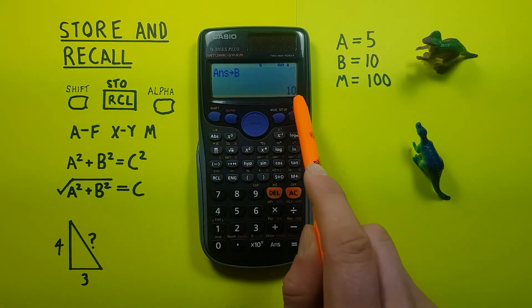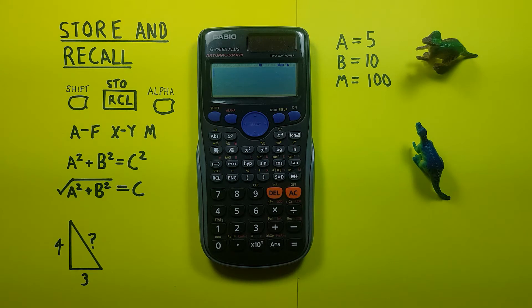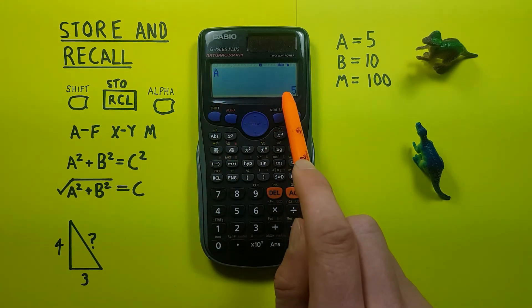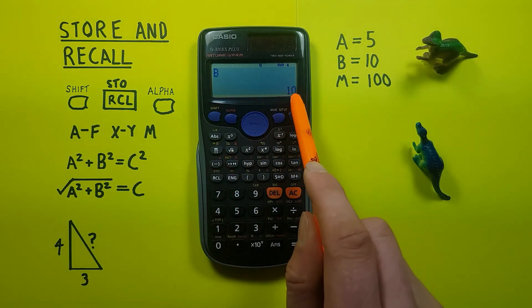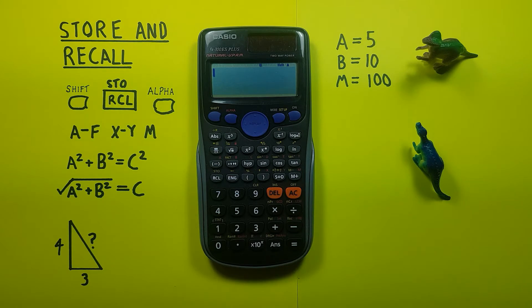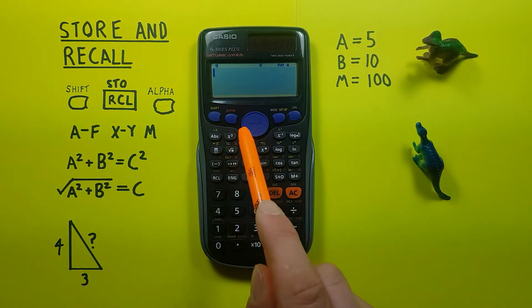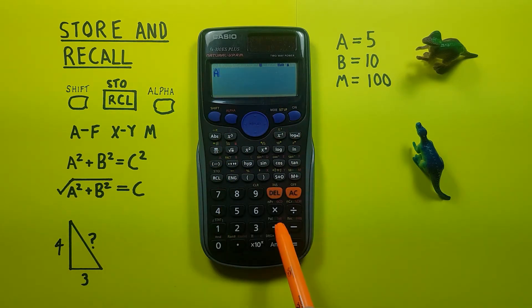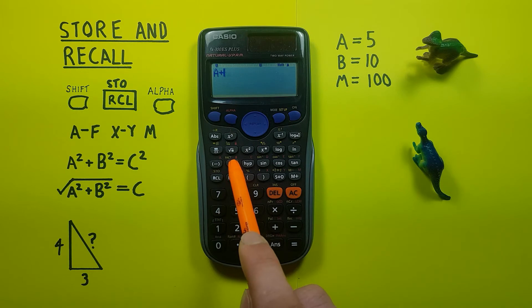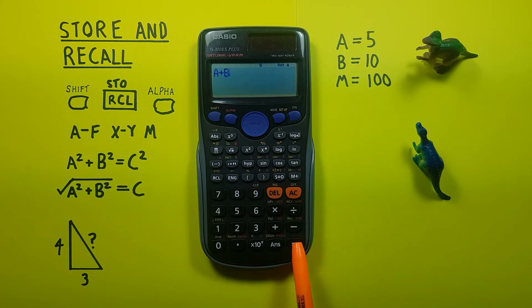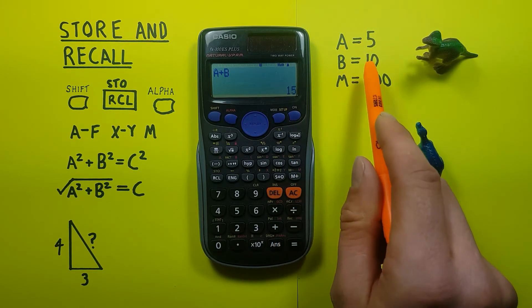We can recall these values by using the RCL function, so that's the main function of this key. So recall A, there we get A is 5; recall B, B is 10. And we can also use these in a formula. Let's say we wanted to do A plus B. After we've stored these values, we can use the alpha key to place A on the screen and add that to our B. I know this seems really simple, but it's a great help if we have long complicated numbers. And then press equals, and we see we get a result of 15, which 5 plus 10, A plus B, is correct.